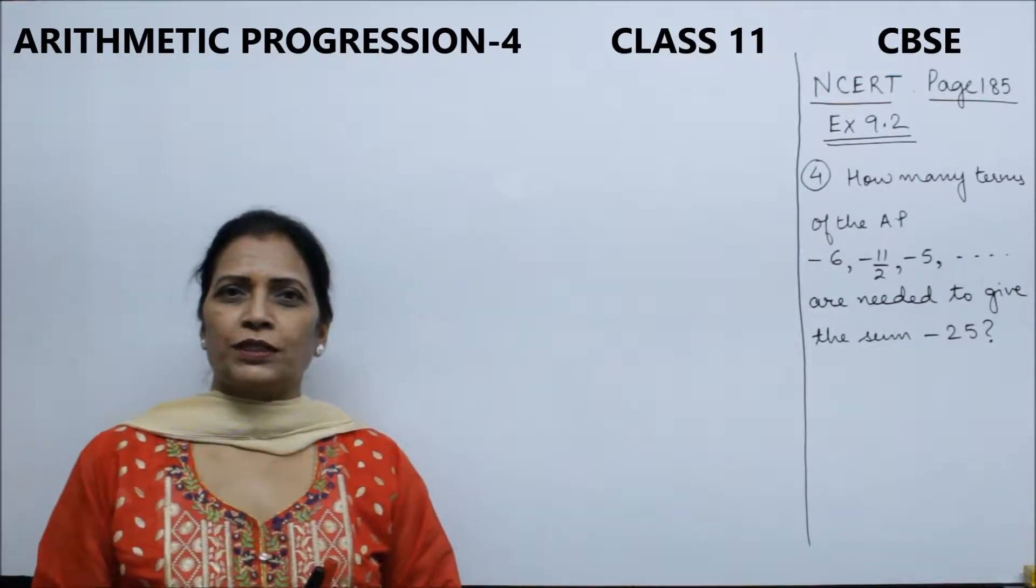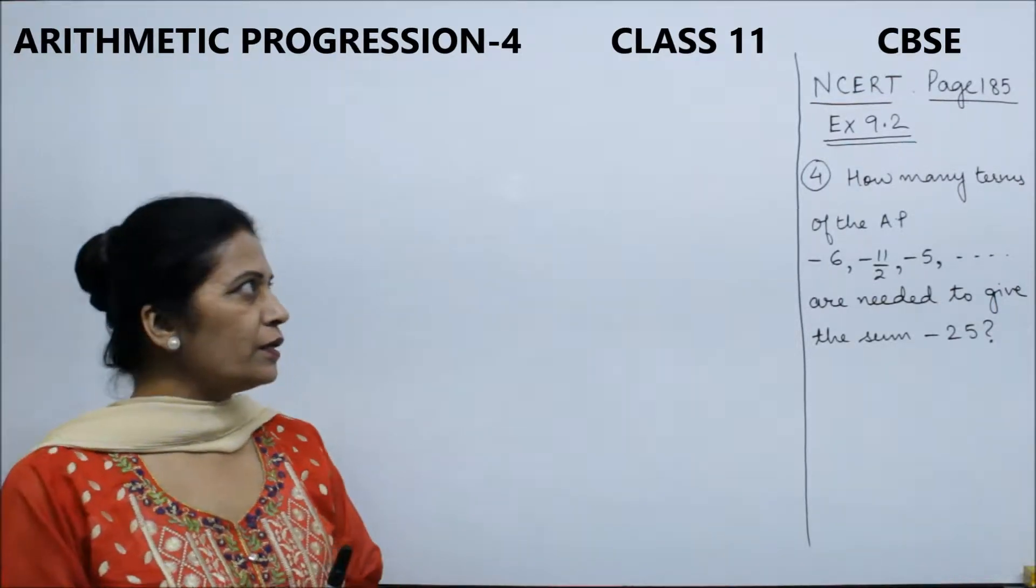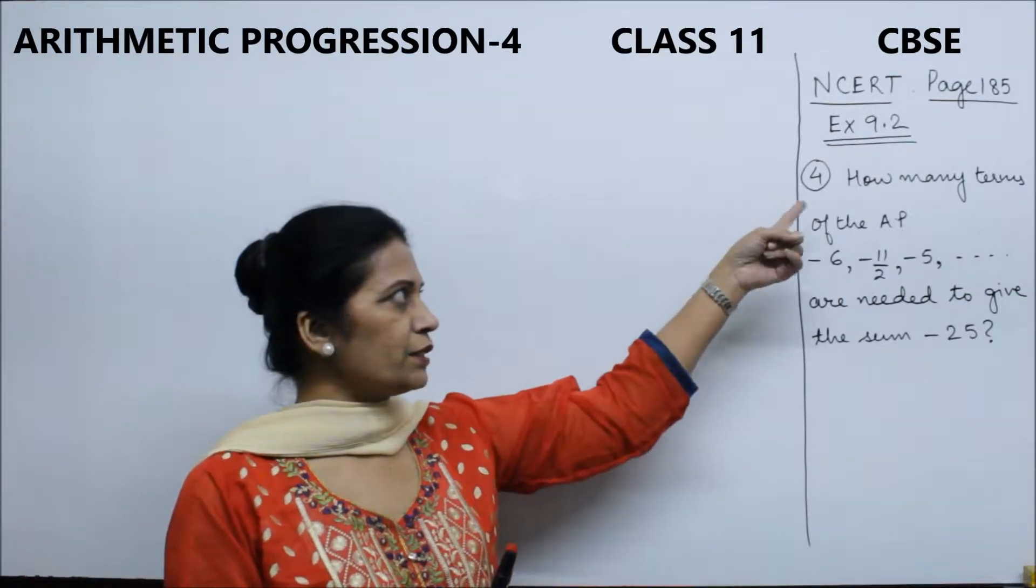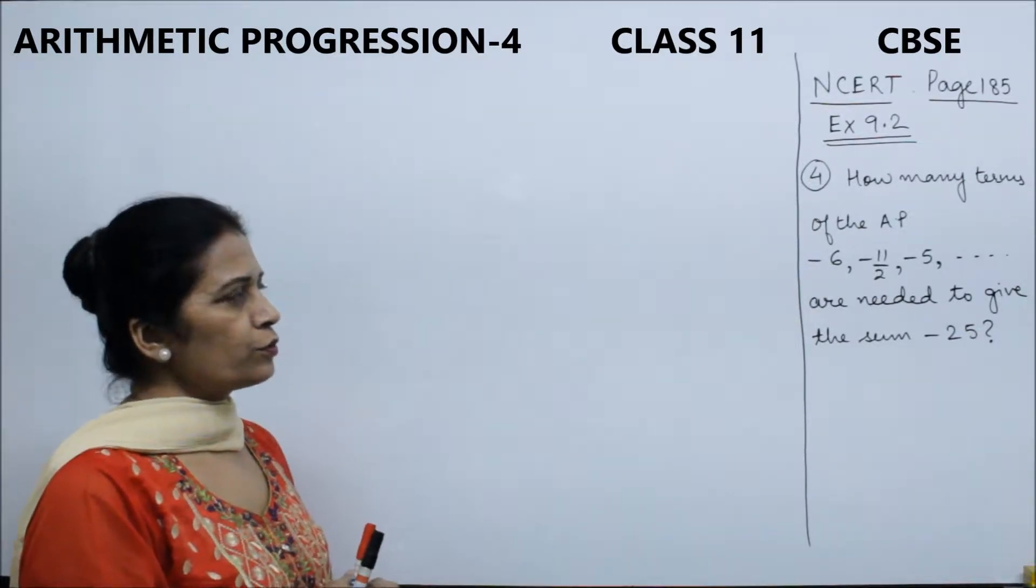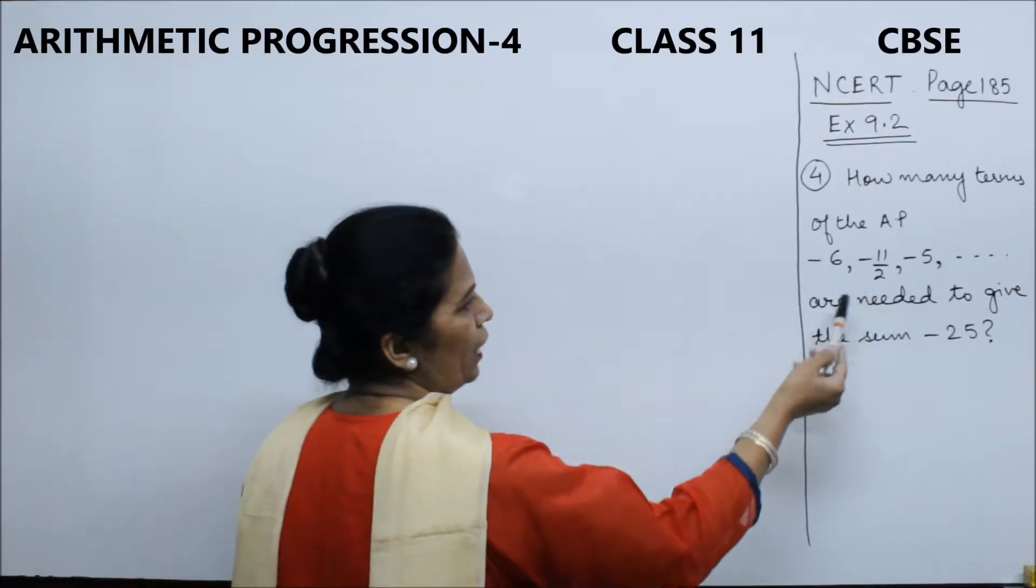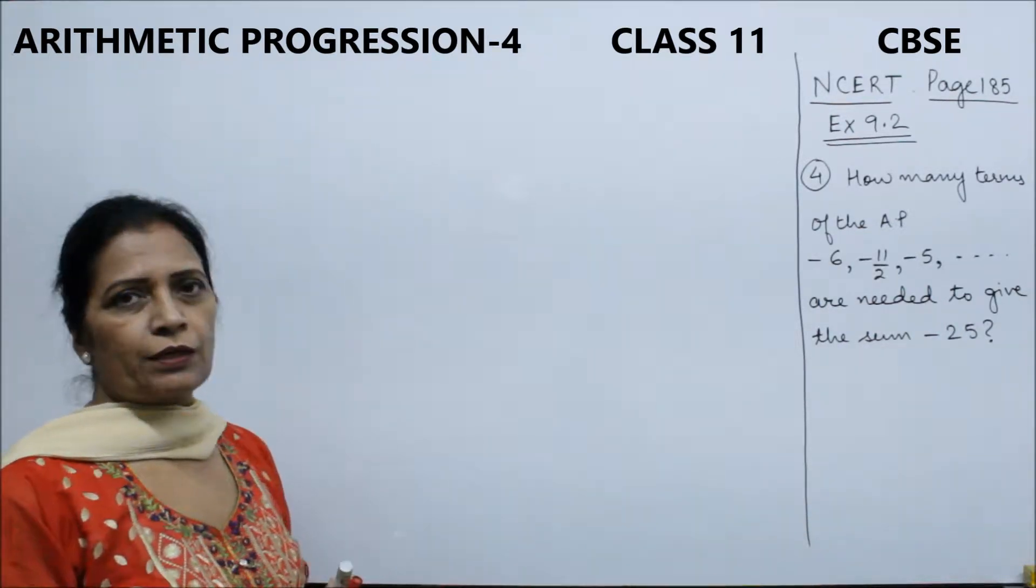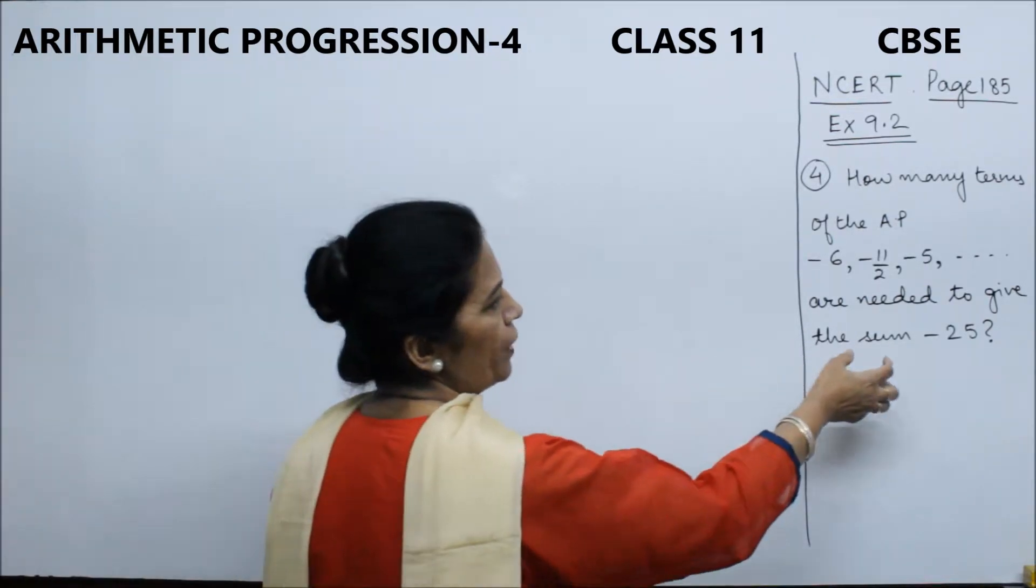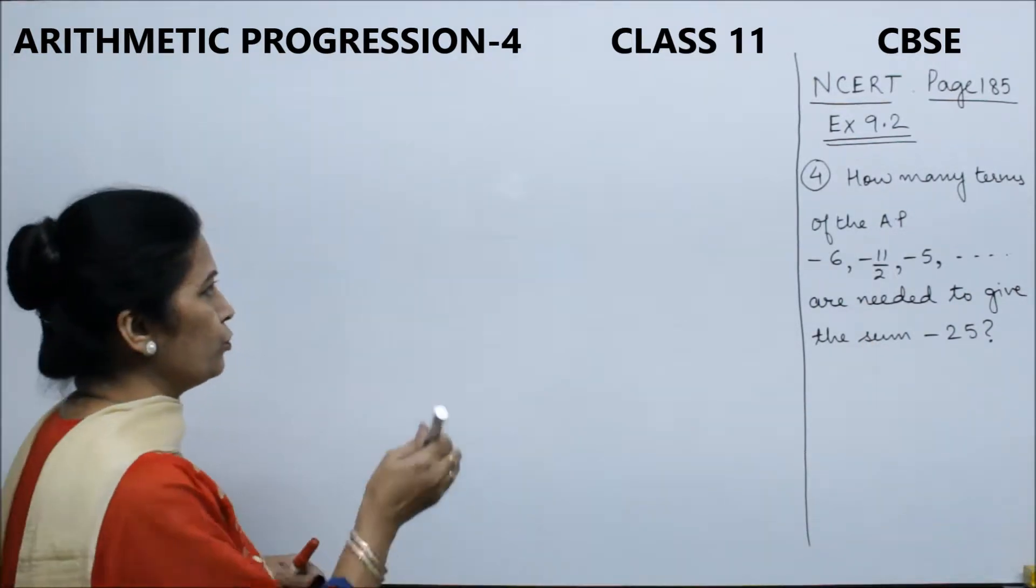Hello dear students, today we will continue the topic arithmetic progression for class 11. In previous videos, we covered questions 1, 2, and 3 from exercise 9.2. Now we will start with question 4. The question is: how many terms of the given AP are needed to give the sum as -25?